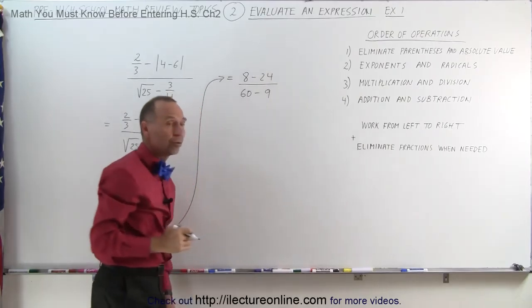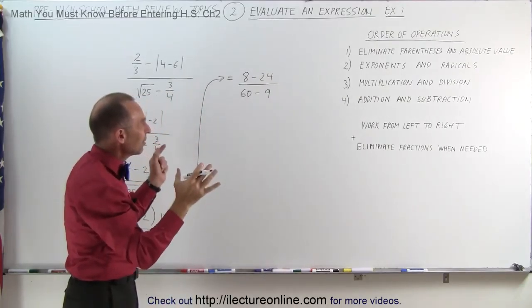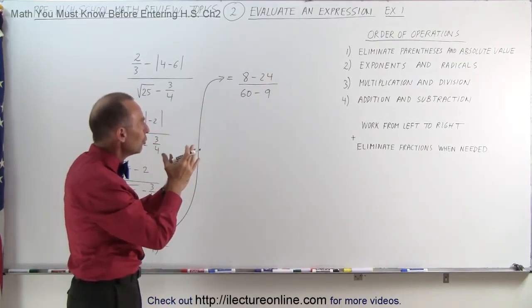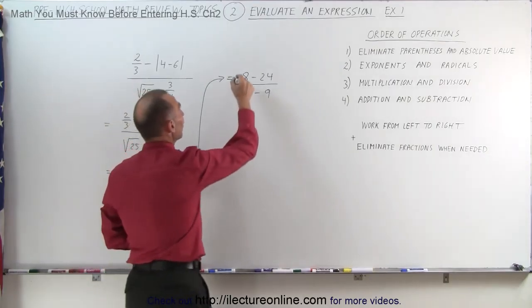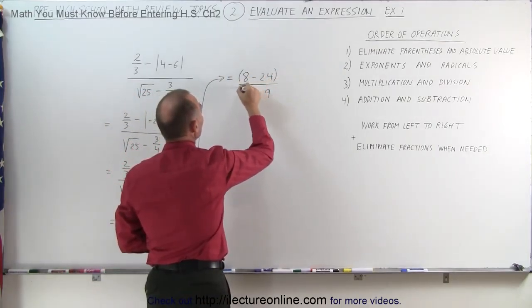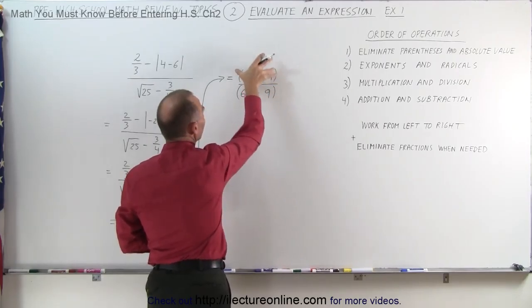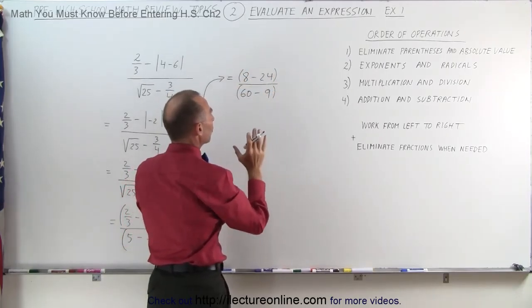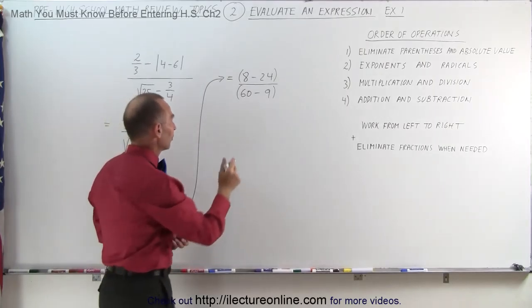But before we can do that, we need to combine what's in the numerator and combine what's in the denominator. You can think of this as still being within parentheses now, because we're dividing the numerator by the denominator. So let's go work out what's in the numerator first and what's in the denominator first.